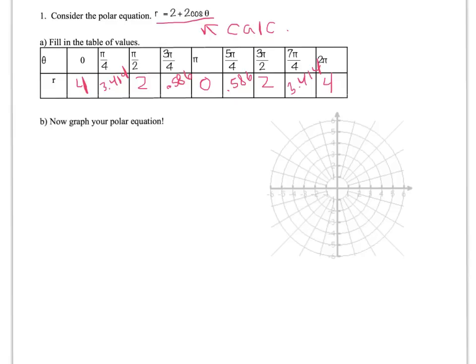Now let's just plot these points and look at what we see. When theta is 0, I'm rotating 0, and I walk out 4, so there's my first point.